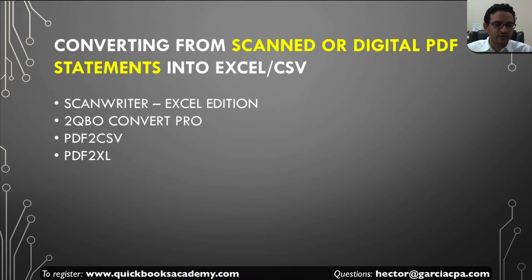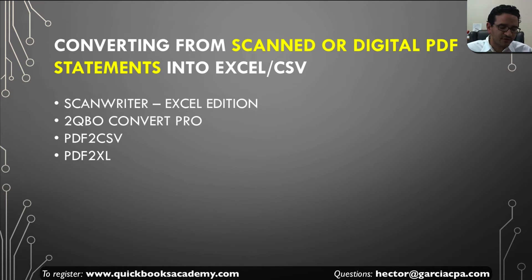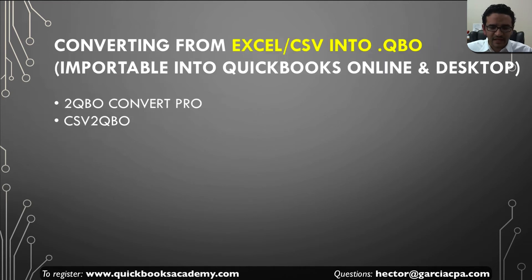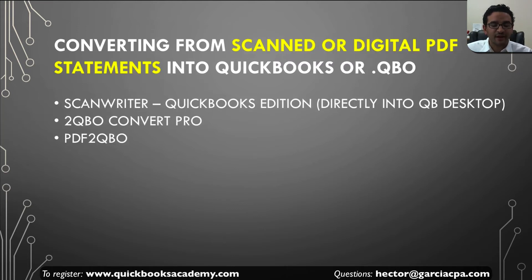Then we'll get into the tools I use to go from PDF to Excel: ScanWriter Excel Edition, 2QBO Convert Pro, PDF to CSV, and PDF to Excel. The last three are the ones I'm going to demo. ScanWriter is hugely popular but it's a $1,500 to $2,000 investment. I'm going to show you the less expensive tools that are between $100 and $300 and show you how to use those, because they can be as powerful as ScanWriter. I'll compare them so you understand under what circumstance one will be better than the other. Then I'll talk about Excel to QBO conversion tools for bank feeds into both QuickBooks Online and Desktop, and how they work with going straight from PDF statement into QuickBooks.